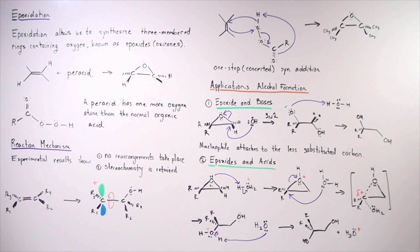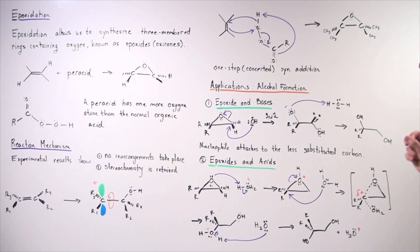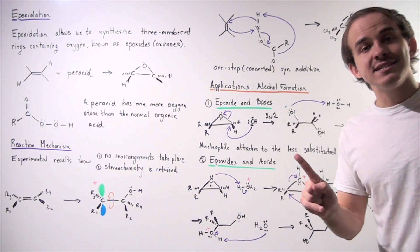And now water can use its pair of electrons to attack the carbon in an SN2 fashion. But the question is, will the water attack from the less substituted side or the more substituted side? The answer is the more substituted side. Why is that?